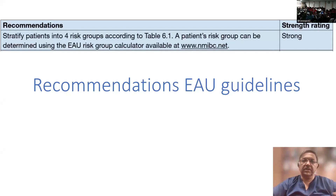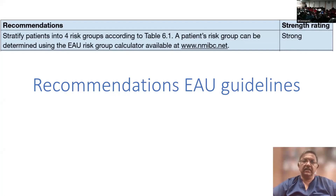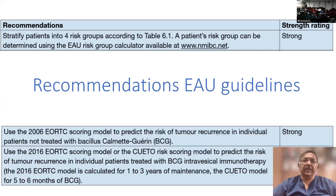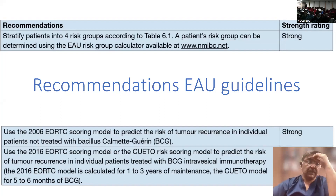The guidelines clearly state that we should stratify patients into low, intermediate, high, and very high risk categories. You can determine that by using nmibc.net, which you can download through this website, and it is strongly recommended by the guidelines. The 2006 EORTC scoring model to predict the risk of tumor recurrence in individual patients treated with BCG is also strongly recommended.